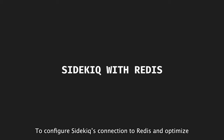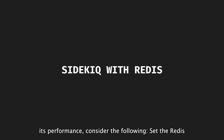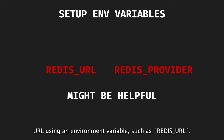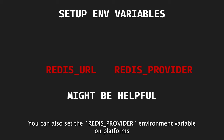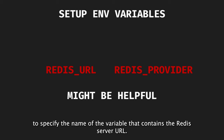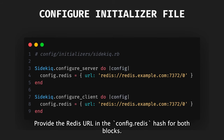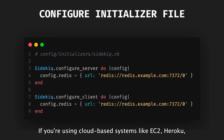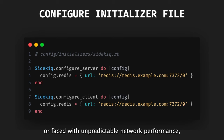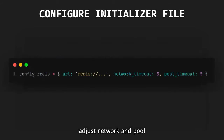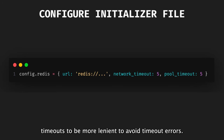To configure Sidekiq's connection to Redis and optimize its performance, consider the following. Set the Redis URL using an environment variable such as REDIS_URL. You can also set the Redis provider environment variable on platforms like Heroku to specify the name of the variable that contains the Redis server URL. Configure Redis in an initializer file using the Sidekiq.configure_server and Sidekiq.configure_client blocks, providing the Redis URL in the config Redis hash for both blocks. If you're using cloud-based systems like EC2 or Heroku, or faced with unpredictable network performance, adjust network and pool timeouts to be more lenient to avoid timeout errors.